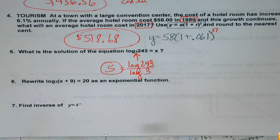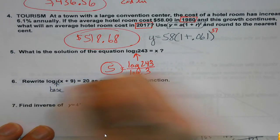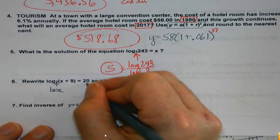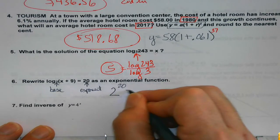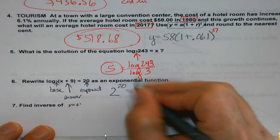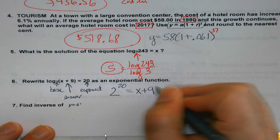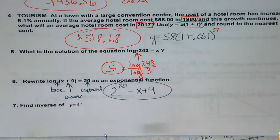Rewrite as an exponential function. The little 2 is my base. The number on the other side of the equals is always my exponent, and whatever is next to the log is always going to be my answer. Nothing to solve — just rewrite it. The little number is the base, the equals part is the exponent, and whatever's with my log is my answer.